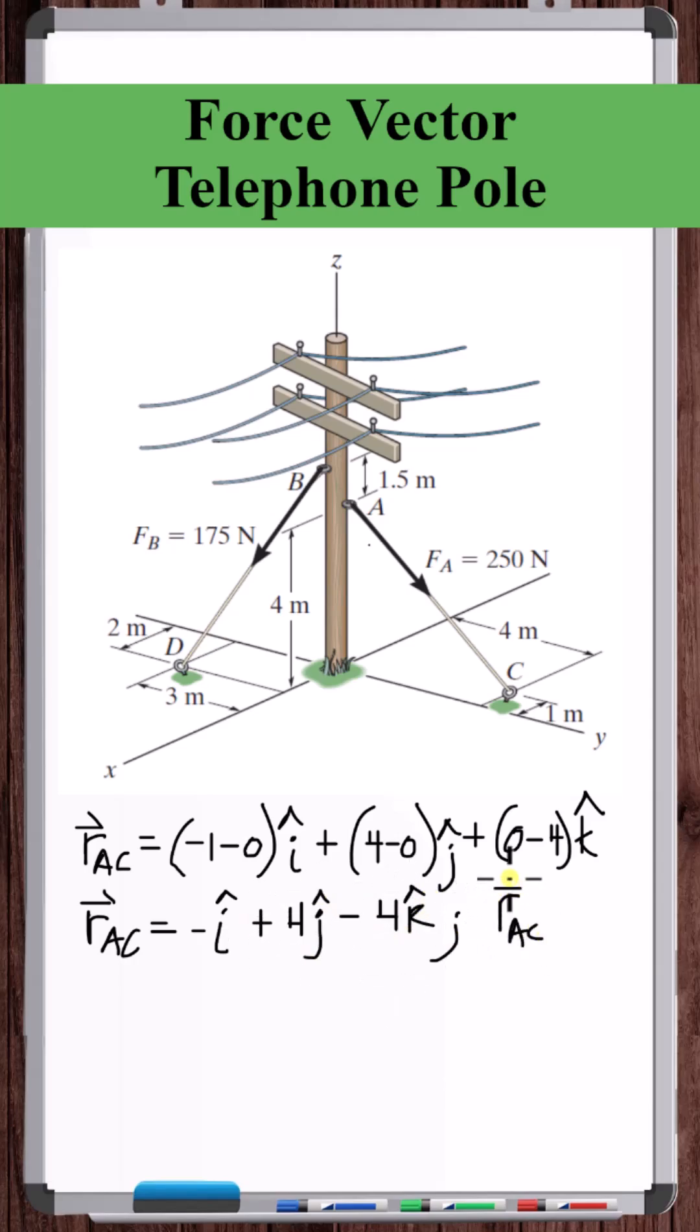the magnitude of RAC is 4 squared plus 4 squared is 32 plus 1 squared, so the square root of 33. So the unit vector in direction A, C is dividing RAC by the magnitude of RAC.